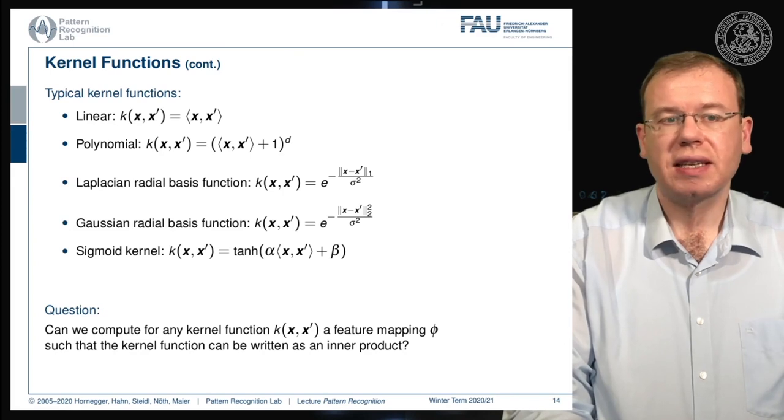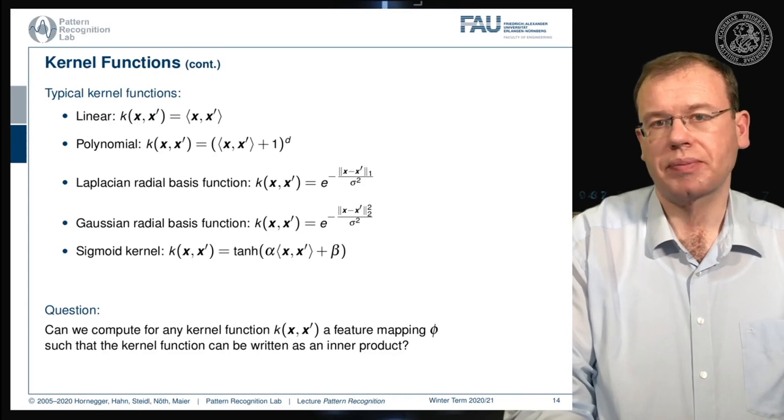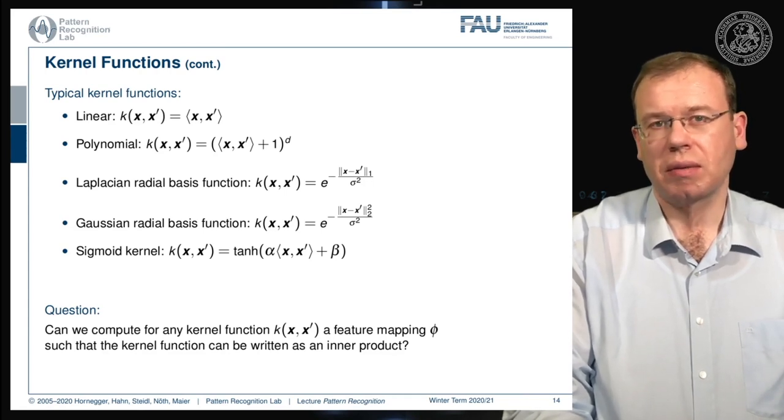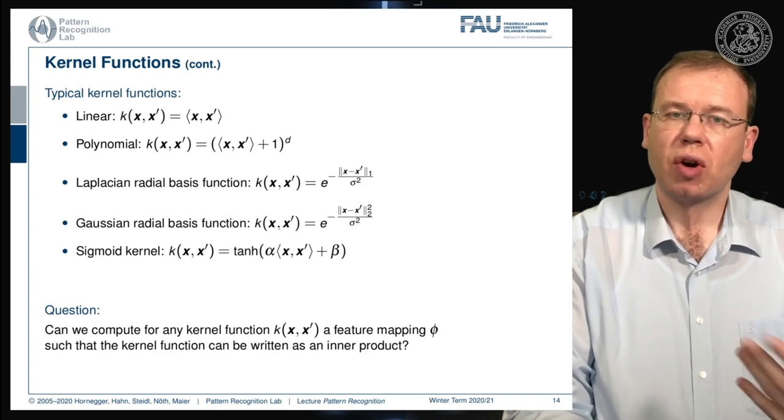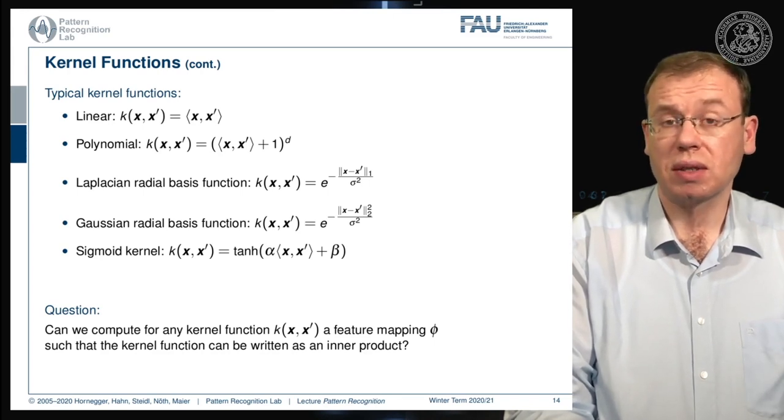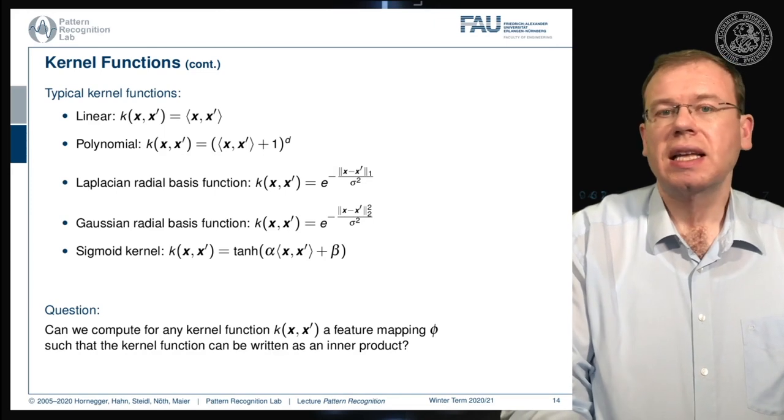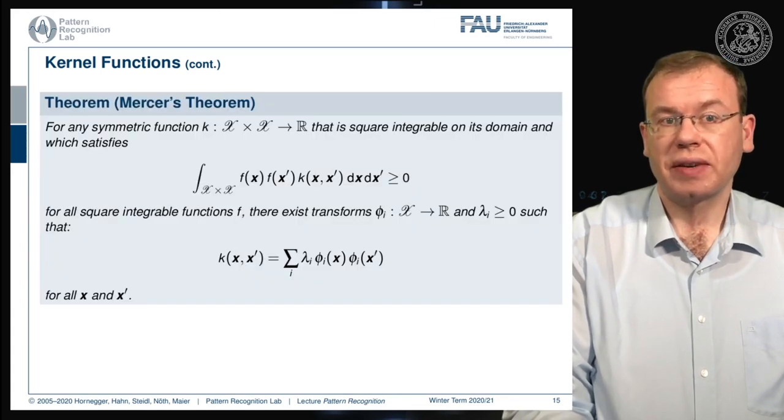Now the real question is, can we actually find for every kernel function a feature mapping phi such that the kernel function can be written as an inner product? This is an important question for us because only then we have this property with the inner product that we use so heavily.